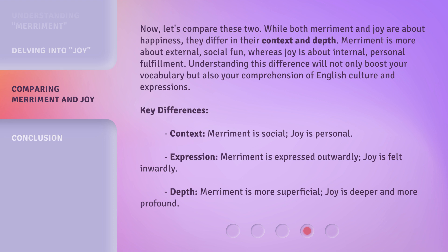Key differences: Context — merriment is social, joy is personal. Expression — merriment is expressed outwardly, joy is felt inwardly. Depth — merriment is more superficial, while joy is deeper and more profound.